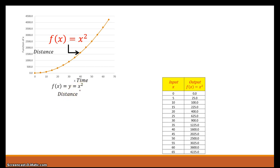This is just a graph of distance versus time. By the definition of what a function is, you have an input and an expected output. At x, f of x is equal to x squared — so the function of x is x squared.